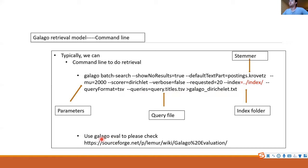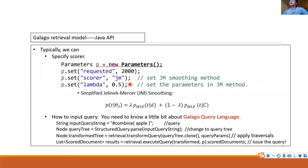You can use Galago eval to do evaluation. For example, if you want NDCG or MAP, you can use the Galago eval command to compute those metrics. This is the command line version of Galago. We can also use a Java API to do the retrieval.